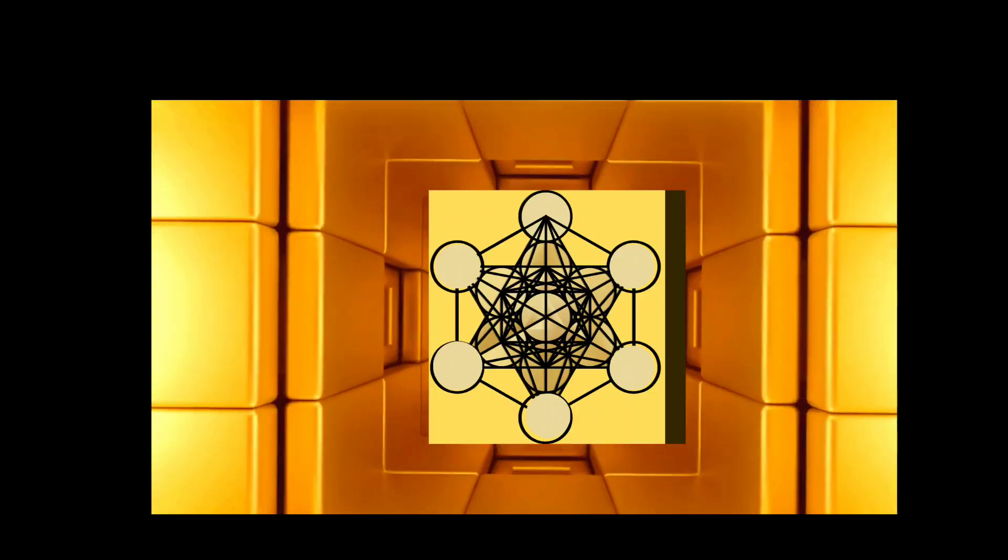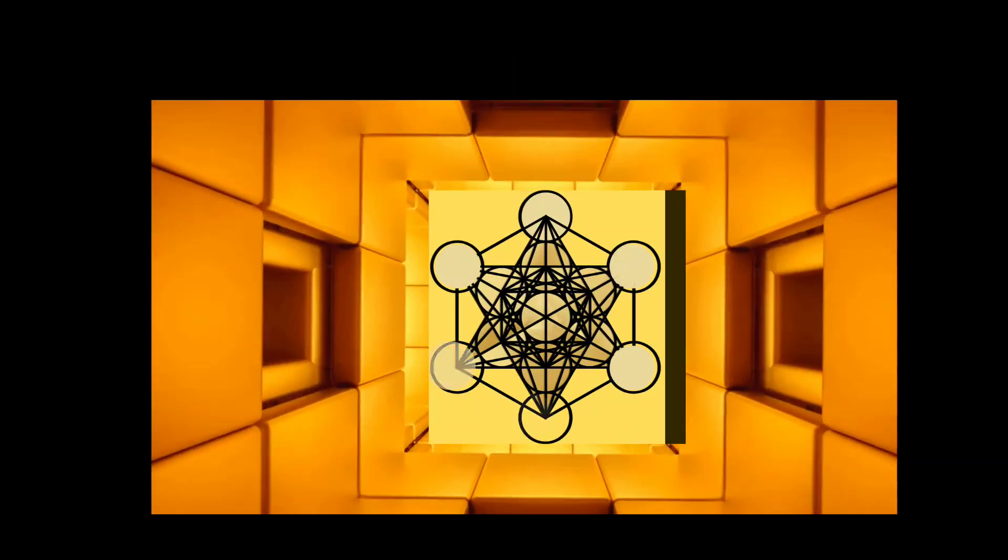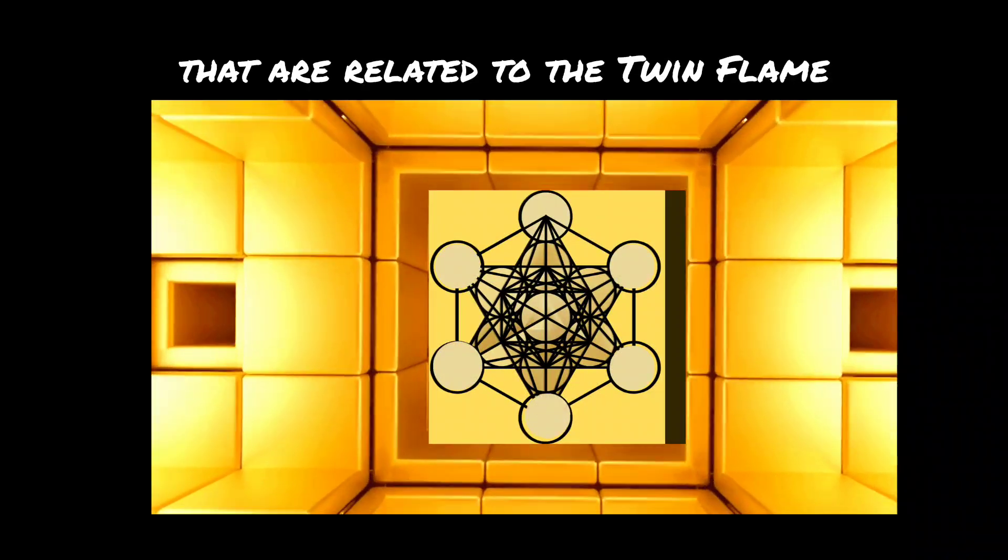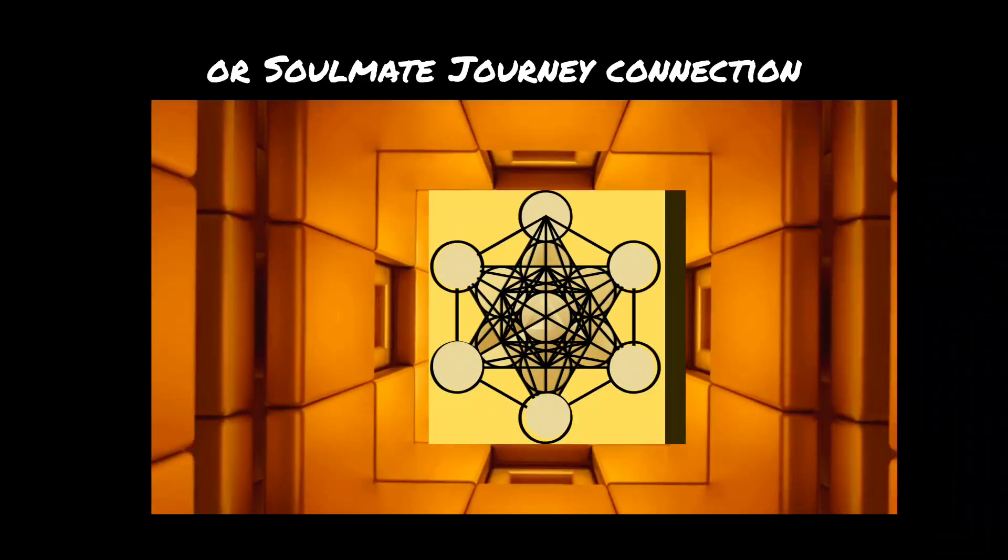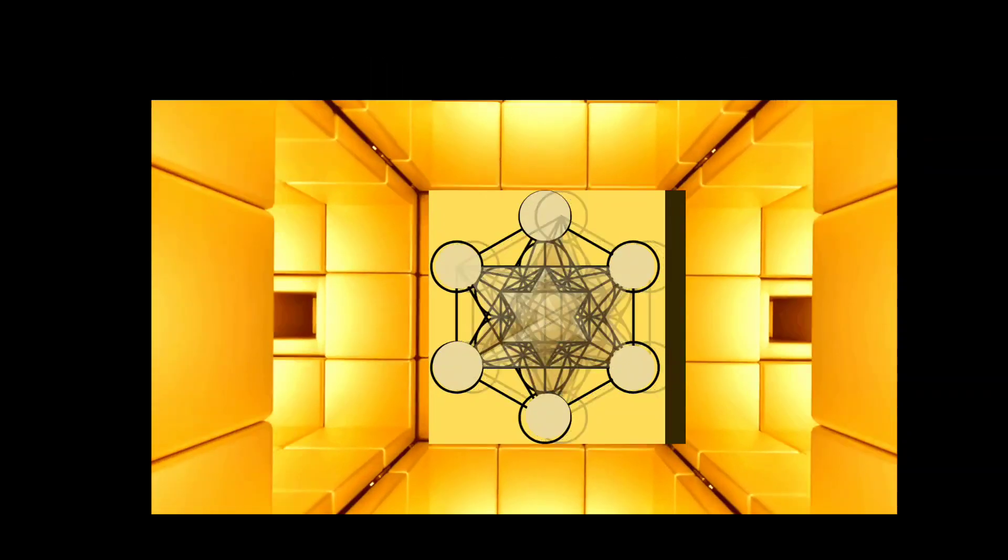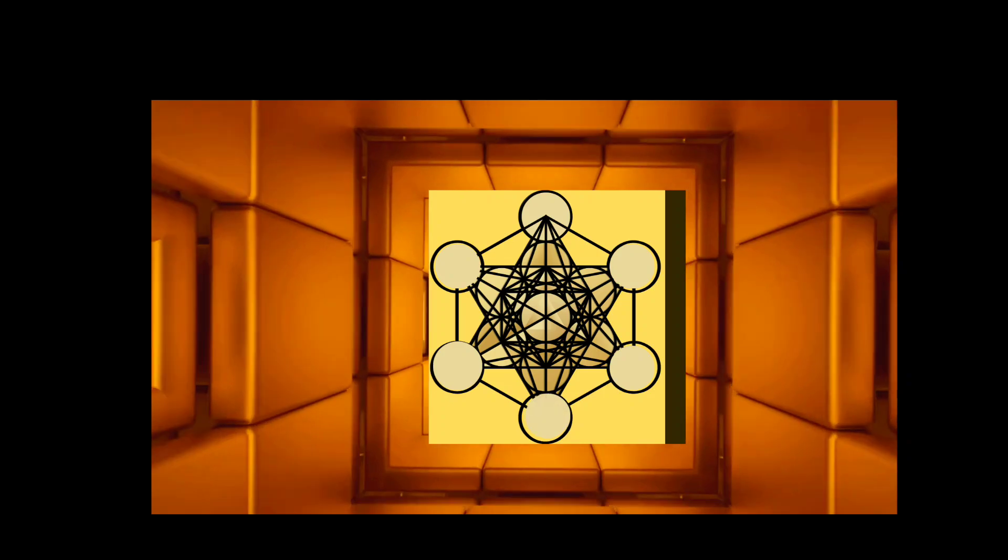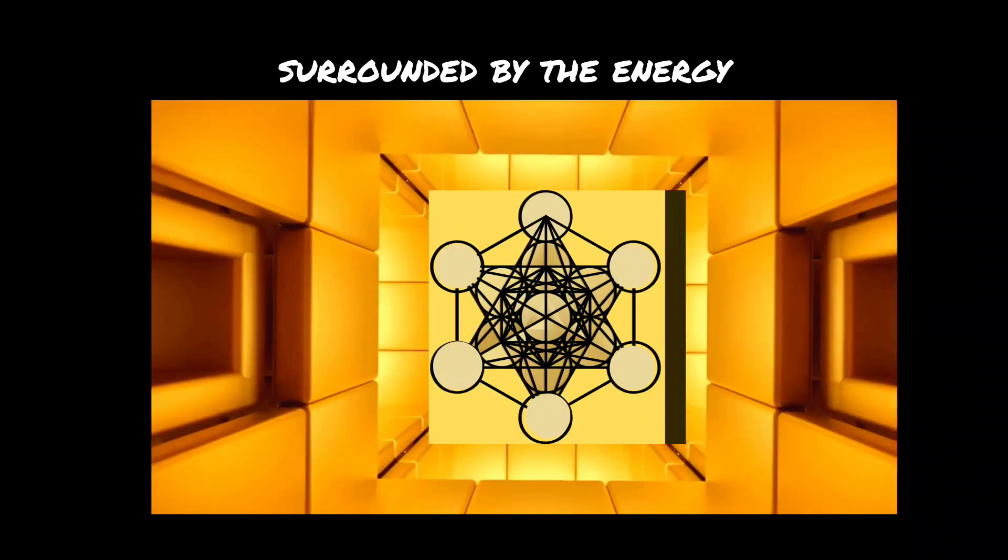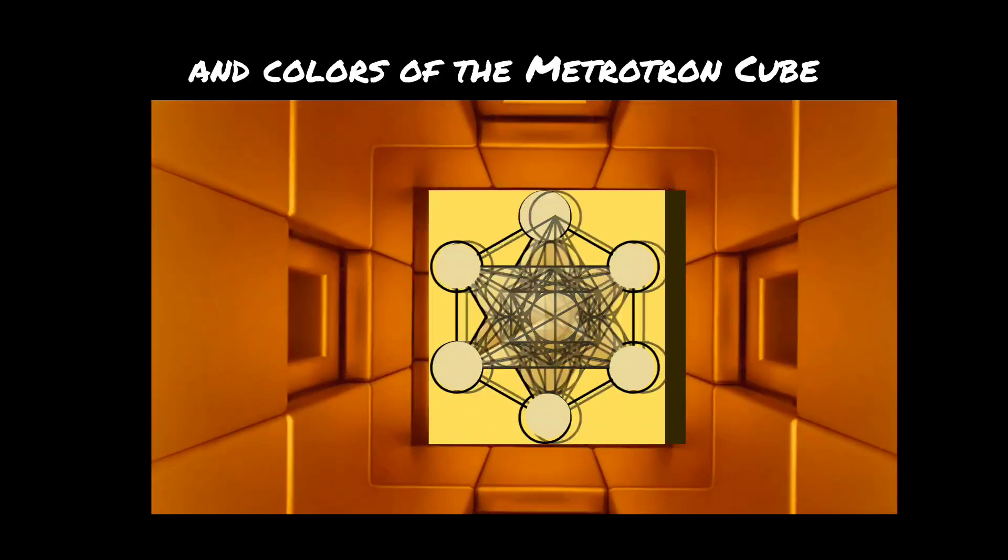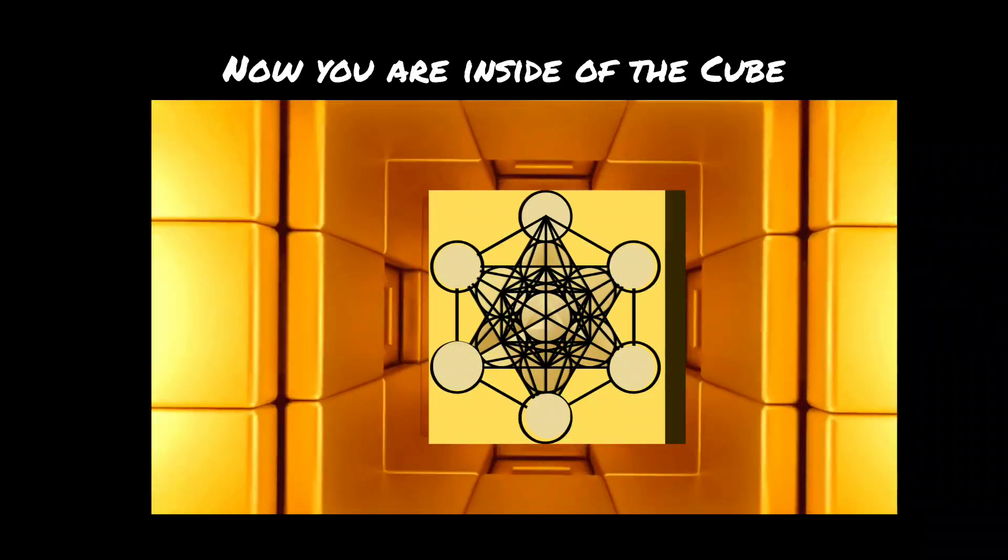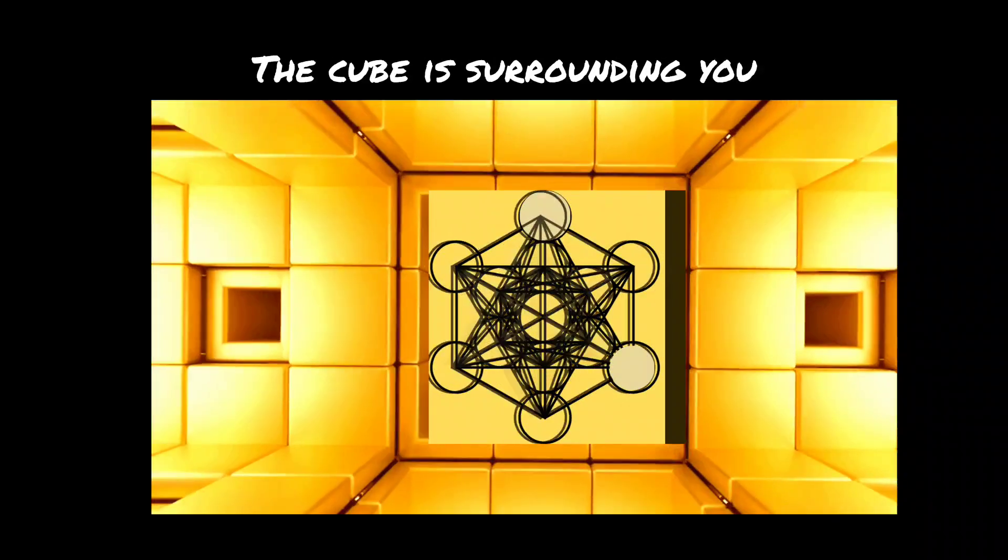Step twelve: now set your intentions that are related to the twin flame or soulmate connection, such as unconditional love, unity, harmony, healing, and spiritual growth. Visualize your intentions being fulfilled, surrounded by the energy and colors of the Metatron cube. The cube is now surrounding you. You are inside of the cube.